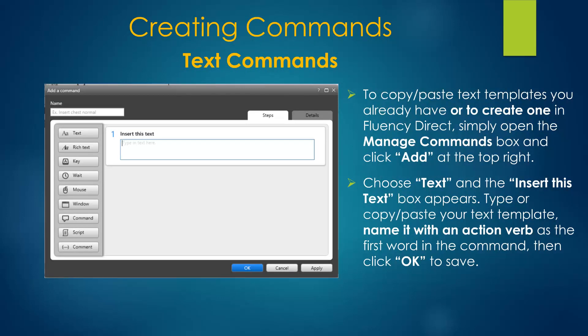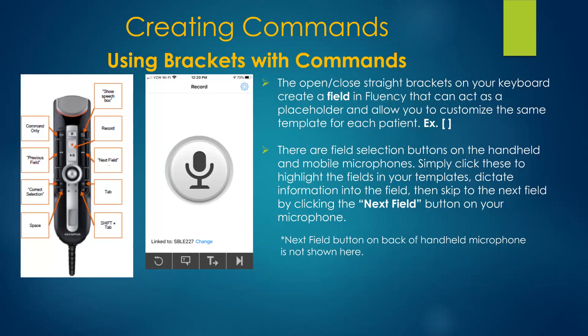You may save templates as text commands in Fluency. Open the Manage Commands box and click Add, then select Text. Type or paste text into the Insert This Text box and save it with an action verb as the first word in the name. Fluency Direct allows the use of straight brackets to create editable fields as placeholders within text commands, thus creating customizable templates. There are field selection buttons on the mics that will move the cursor to the next or previous field.